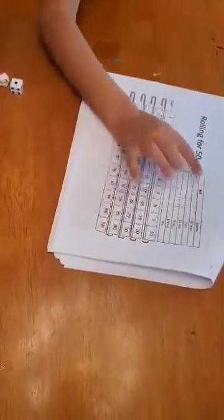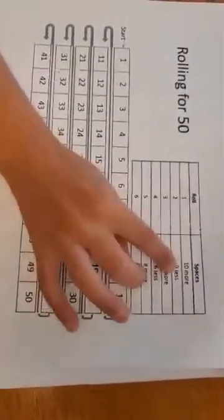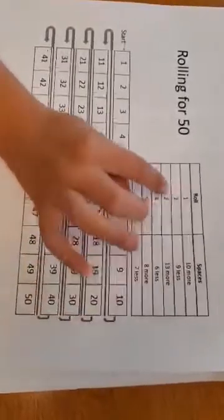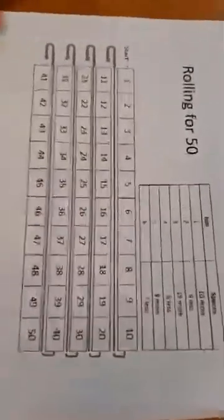So this shows what your roll is, and then you roll your finger across and it sees where you have to move. Like this one says ten more, two says nine less, three says thirty more, and four says six less.